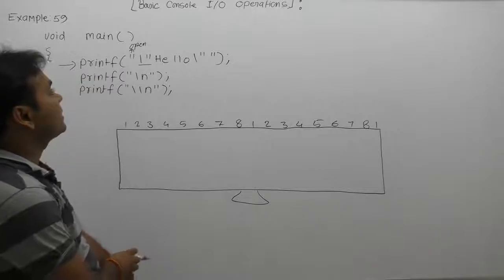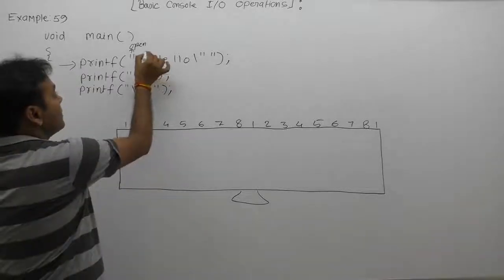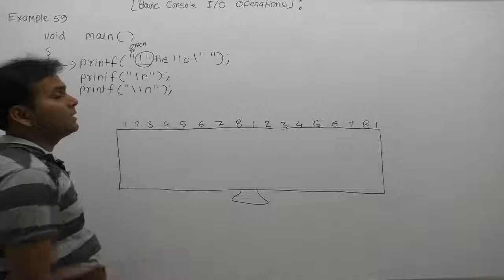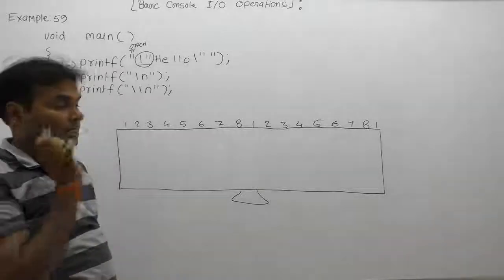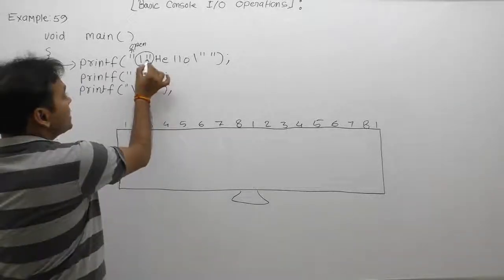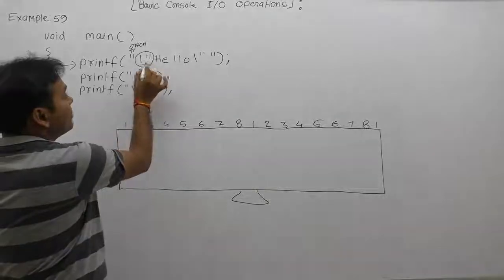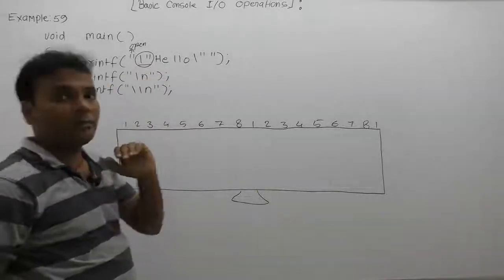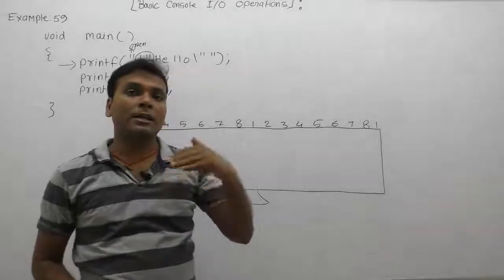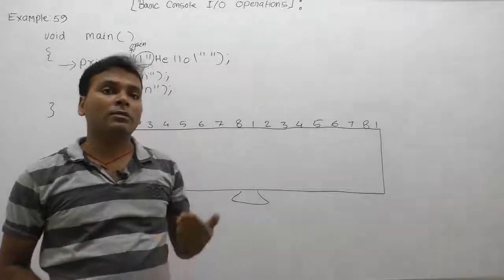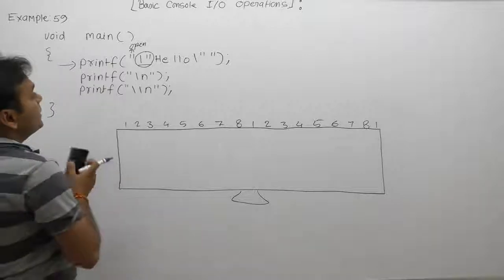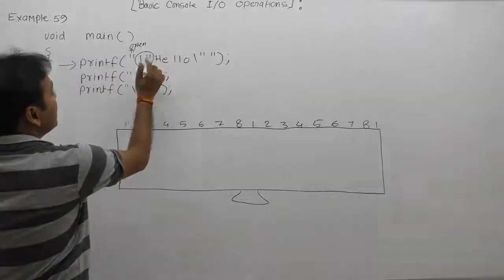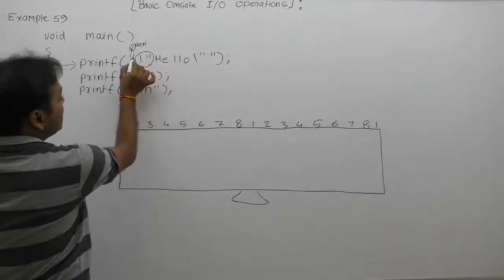Here, slash double quotes is considered as single character, not two characters. There is no specific meaning of double quotes because it simply occurs just after slash. Any character which occurs just after slash is not directly printed, it will simply represent the next ordinary character. Previous case, double quotes string opening, but here double quotes is simply an escape sequence character.